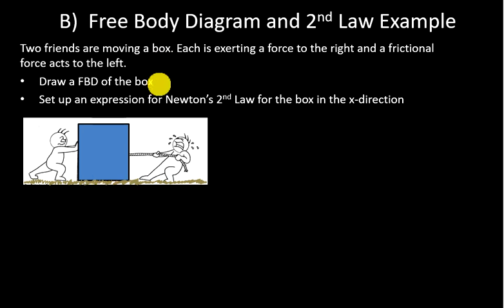We want to do two things, draw a free body diagram and after we do that, try and set up Newton's second law. So let's start off drawing a free body diagram for the box. The first key idea, you're always drawing it for one object. So we're going to draw a free body diagram just for the box, not for the person on the right, not for the person on the left, just the box. There's the box. I've replaced it with a dot. That's step one.